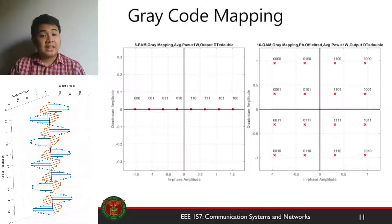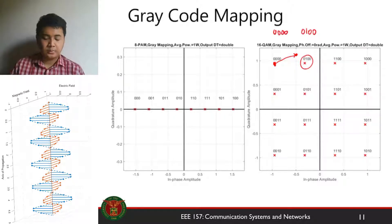So what's the advantage of that over other forms of mapping? When your transmitter transmits this symbol from your 16 QAM, and the receiver receives this displaced symbol, which is closer to 0100, the receiver will think it's 0100 instead of 0000. Between the two, you only have one bit error. That's the advantage of gray code mapping.